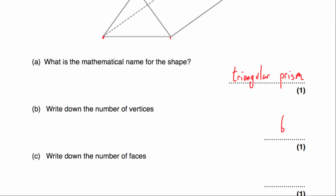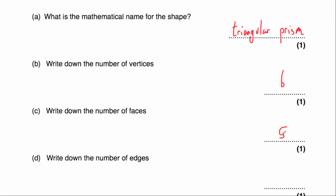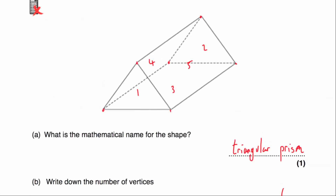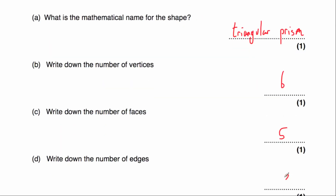Part C: write down the number of faces. The triangular prism has 1 at the front and 1 at the back — that's 2 — then the bottom is 3, and the left-hand side and right-hand side make 4 and 5. So altogether there are 5 faces. Part D: the number of edges — counting: 1, 2, 3 on the front, then 4, 5, 6 leading backwards, and 7, 8, 9 at the back — so 9 edges. A triangular prism has 6 vertices, 5 faces, and 9 edges.